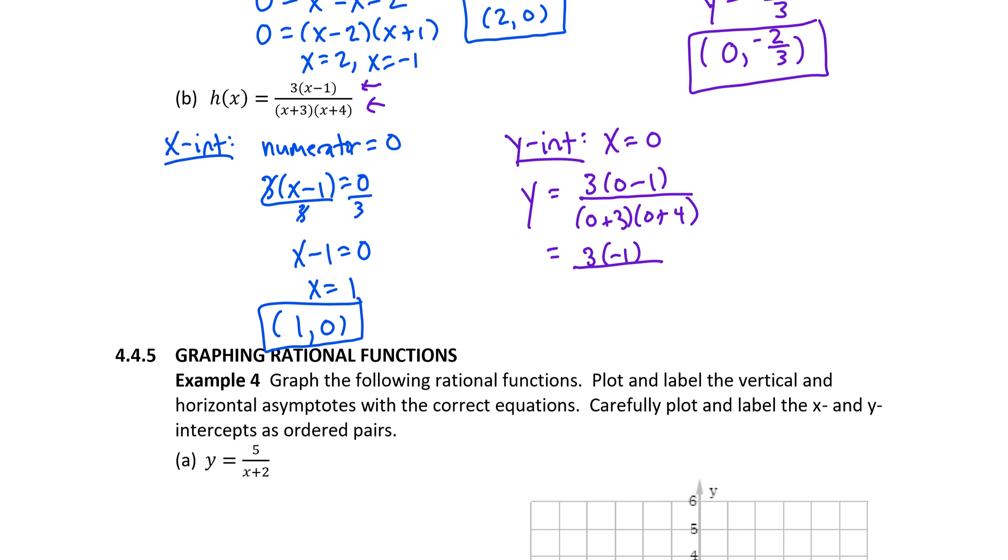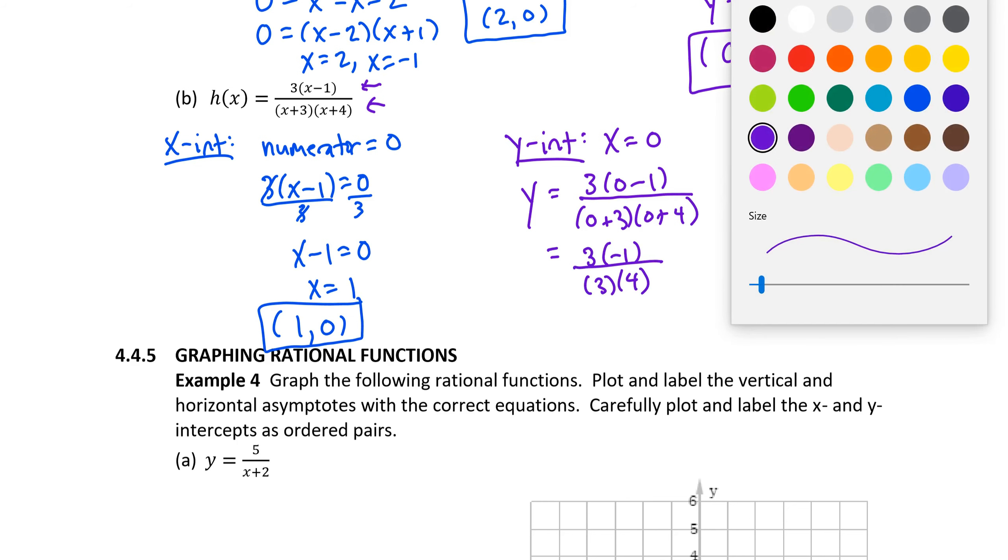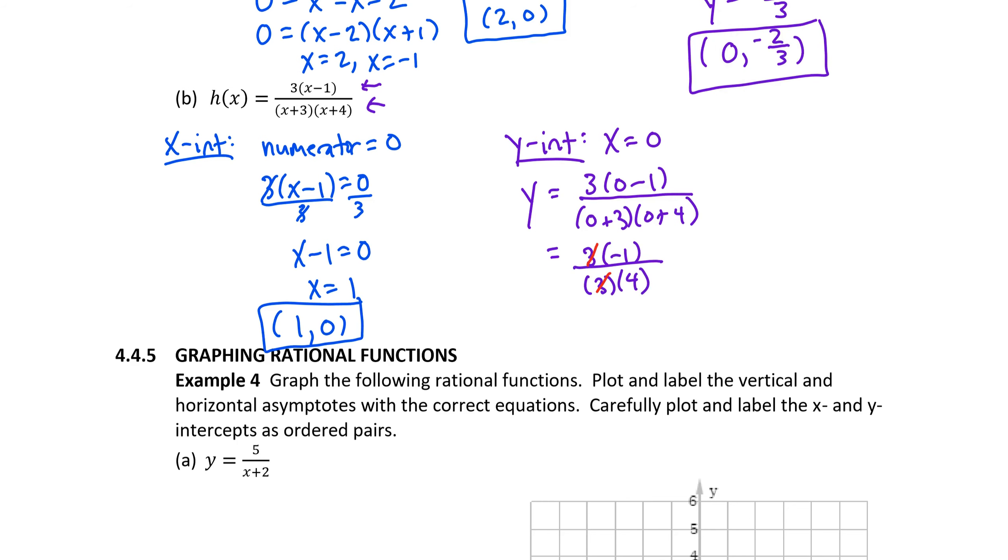We have 3 times negative 1 over 3 times 4. If we reduce, we've got a common factor of 3 here. It looks like our y-intercept then occurs at negative 1 fourth. So officially, our location would be 0 and negative 1 fourth.